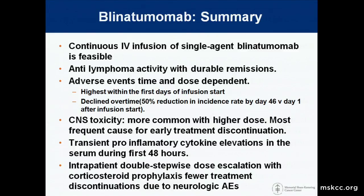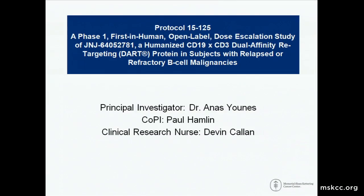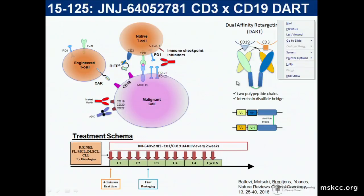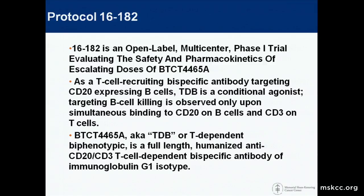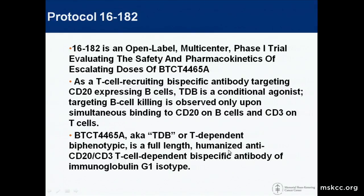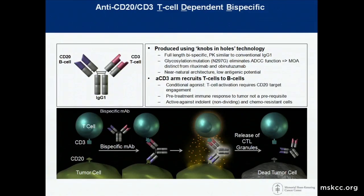What was recognized right away was that continuous infusion was a logistical impediment, and it didn't take long for additional constructs with longer half-lives to be developed. We have in study now the dual affinity retargeting DART protein — Dr. Yunus is leading that effort — targeting CD3 and CD19. Initial treatment is given inpatient, but if tolerated without neurotoxicity, it settles into an every-two-week IV therapy. Similarly, Dr. Matazar is working with a Genentech compound that's a bispecific antibody directed against CD20 and CD3. These humanized anti-CD20/CD3 molecules have a longer half-life, and the dosing is every three weeks.